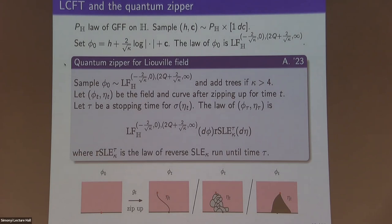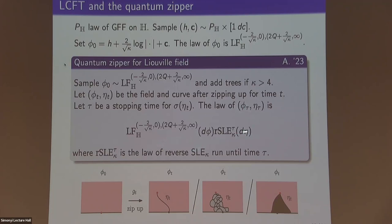Starting with the quantum zipper statement and adding a Lebesgue-typical real number to it, you immediately get the following: if you sample your field from a Liouville field with an insertion at zero and an insertion at infinity, and then zip this field to itself via the quantum zipper, then if tau is a stopping time depending only on the curve, the law of the field and curve is given by an explicit product measure — the curve is reverse SLE run until tau, and the field is the Liouville field. This means they are independent in the sense of being a product measure.